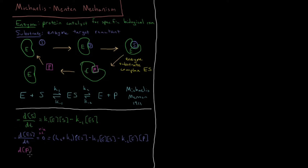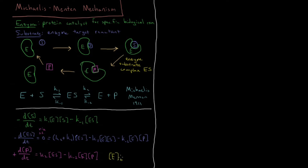For dP/dt, the product rate: it gets produced via K2 with rate K2 times [ES], and it gets consumed by K-2, so minus K-2 times [E] times [P]. Another key constraint is that our total enzyme concentration is fixed. E0 equals [E] plus [ES] — the enzyme either exists as free enzyme or as the enzyme-substrate complex at any given time.